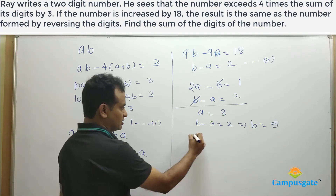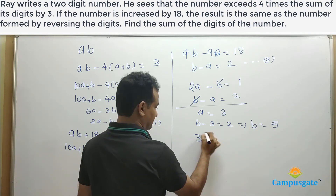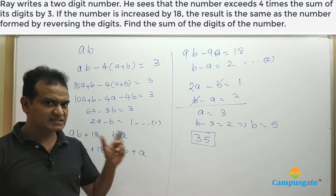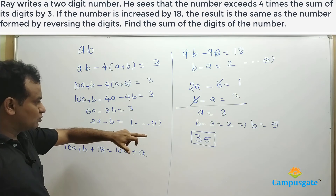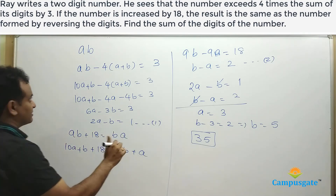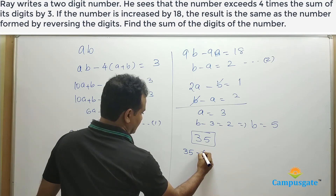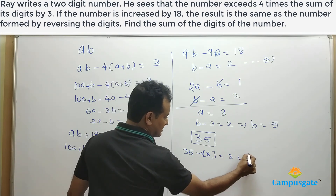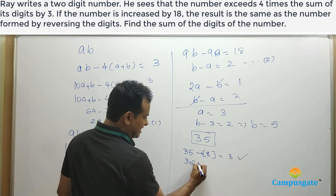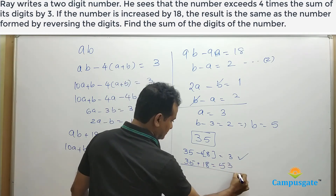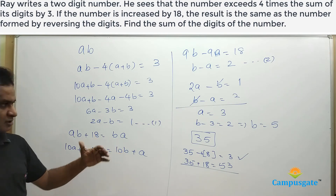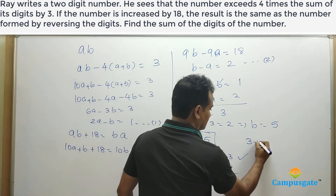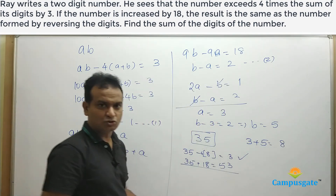That means the given number is 35, where A equal to 3 and B equal to 5. Let us cross-check: the number 35 exceeds 4 times the sum of its digits — that is 4 times 8 equals 32 — by 3, since 35 minus 32 is 3. This satisfies the first condition. The second condition: when you add 18 to 35, you get 53, which is the reverse of the digits. This also satisfies the second condition. So the number is correct, and the sum of the digits is 3 plus 5 equal to 8. This is the correct answer.